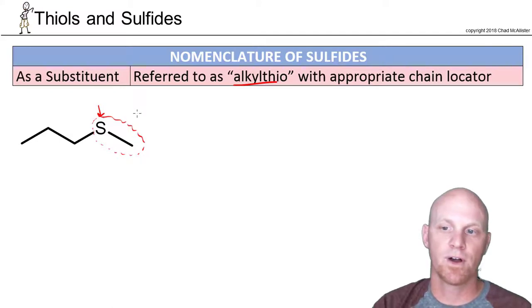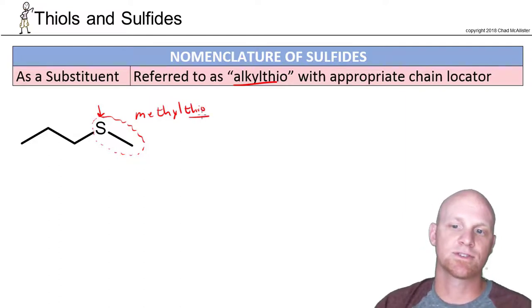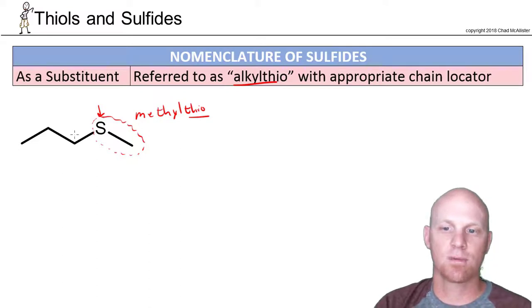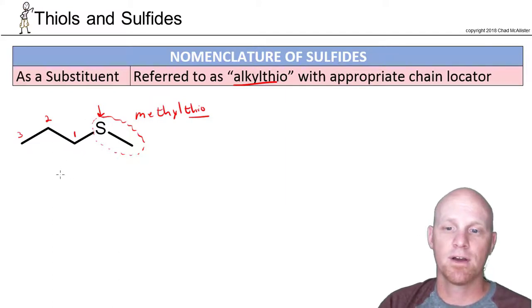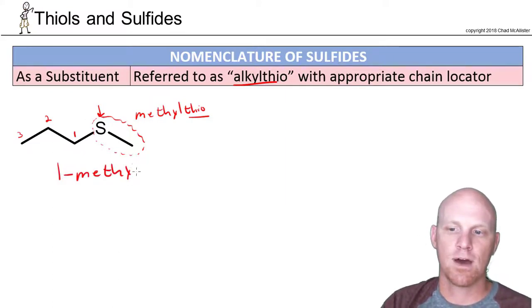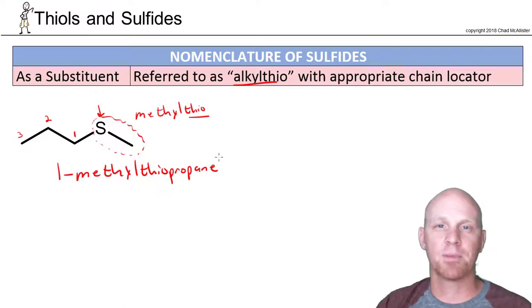So in this case, our alkyl group is a methyl group, so this is a methylthio group. See that word thio anywhere? It always refers to sulfur. In this case, our longest carbon chain is one, two, and three carbons. We numbered it in such a way that our only substituent would get the lowest possible number. So this is 1-methylthio, and a three carbon chain is just propane. So 1-methylthiopropane.